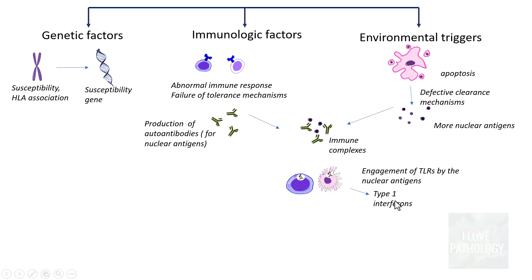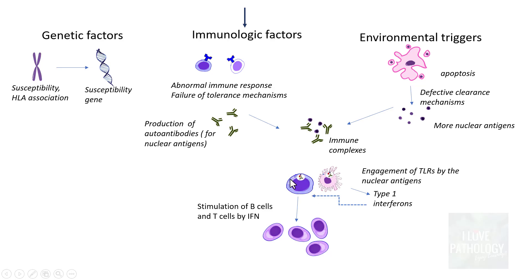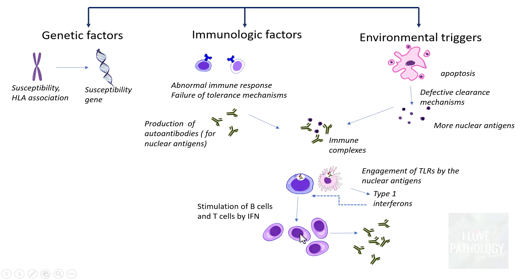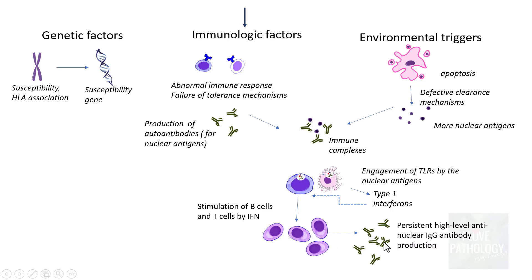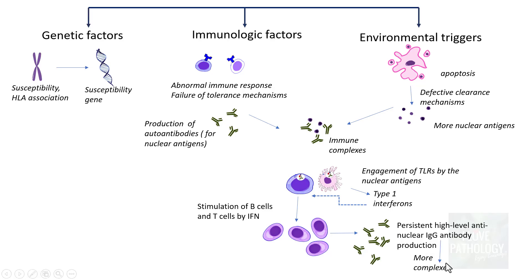Once the toll-like receptors engage the nuclear antigens bound to autoantibodies, there is activation of nuclear factor kappa B, finally leading to production of type 1 interferon. This type 1 interferon stimulates B cells again — they get activated, convert to plasma cells, and produce more and more antibodies, explaining the persistent high-level anti-nuclear IgG antibody production. More antibodies mean more immune complexes being deposited, resulting in more injury.